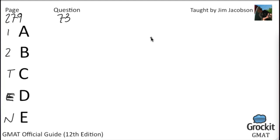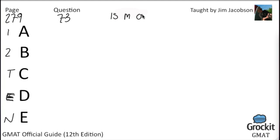Question number 73: If M is an integer, is M odd? There's nothing in the question itself that gives us any information about the qualities of M, so we need to get to the statements.